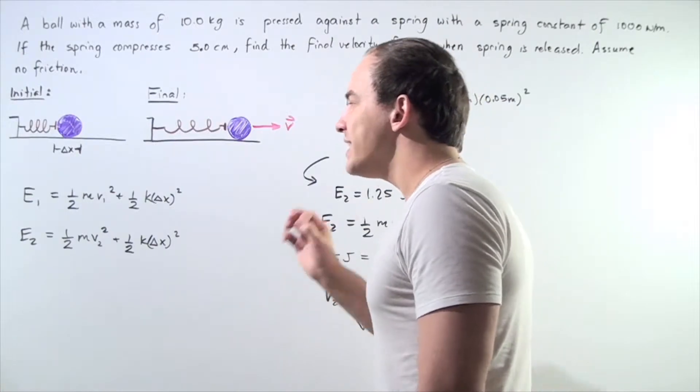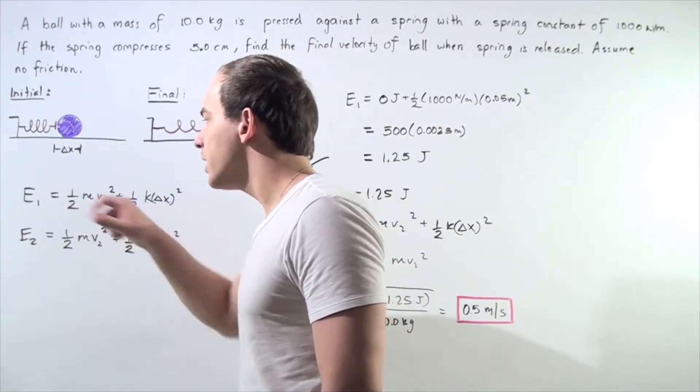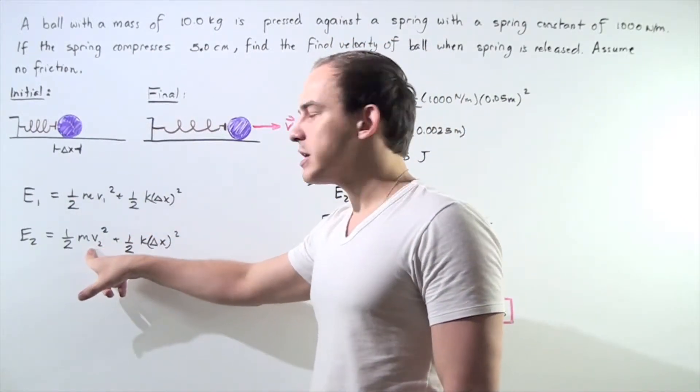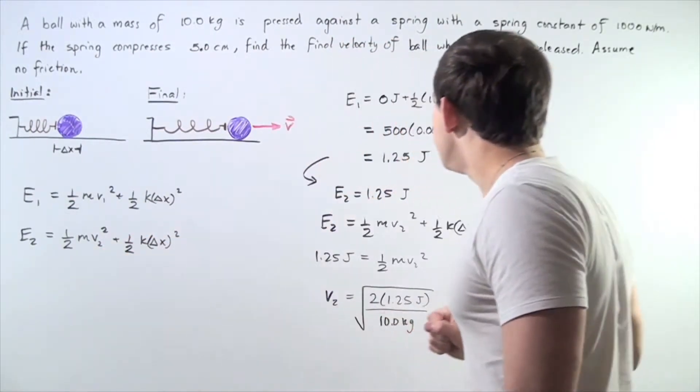So our object initially is assumed to have a velocity of zero. If we calculate the quantity of E1, we can then use that to calculate the final velocity of the object V2. So let's begin.